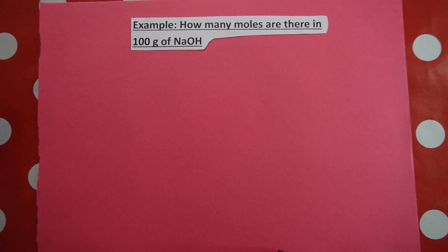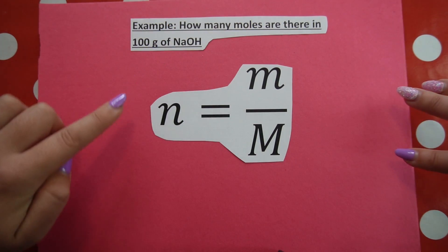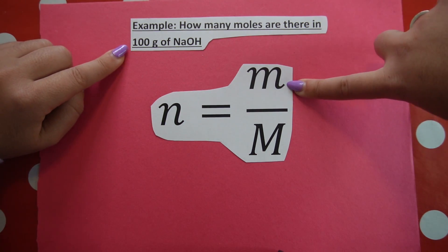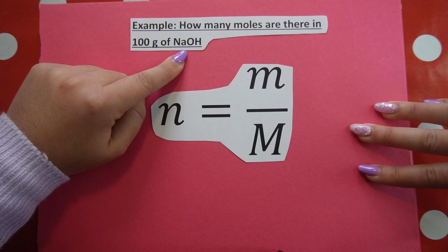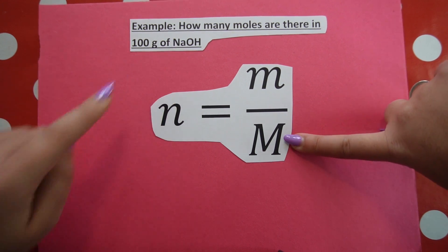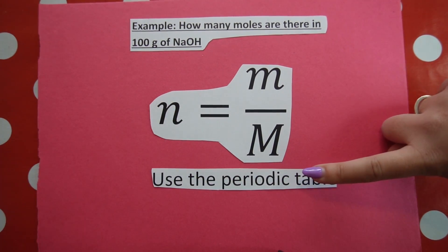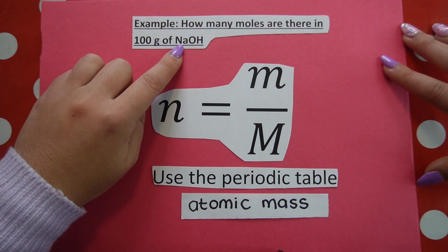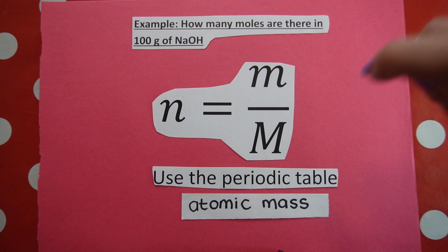So for example, how many moles are there in 100 grams of NaOH? If we take a look at our formula, we can see that they are looking for moles. They're looking for baby N. How many moles? They give me 100 grams. That is mass. And now you might be thinking, but they didn't give me molar mass. But as soon as they give you a compound or formula unit, this is our molecular formula. As soon as you're given that, we can work out molar mass. Because remember, in order to work out molar mass, we use the periodic table and we use the atomic masses listed on the periodic table. So we take our periodic table, we look up the atomic mass for sodium, for oxygen, and for hydrogen. We add them together and that gets us big M.